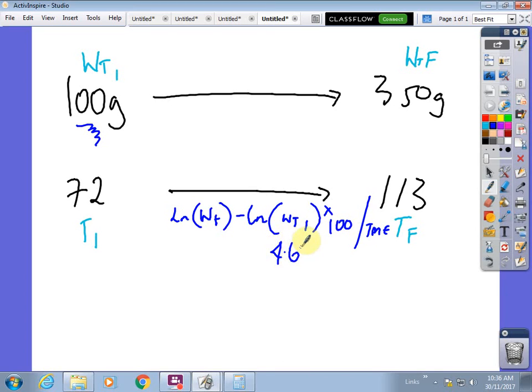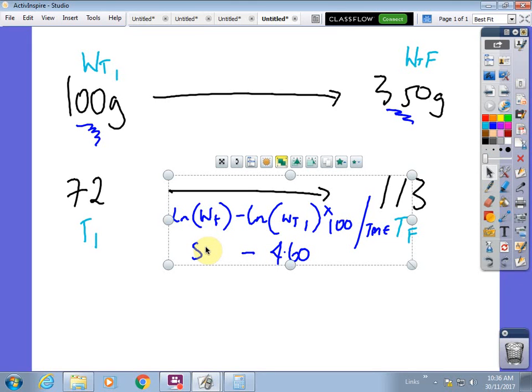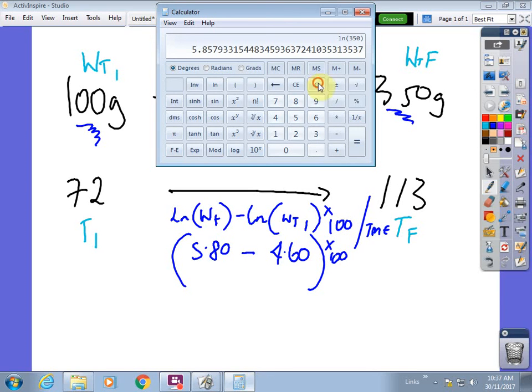Then we're going to do the same thing for this ln final weight which is going to be 350 over here. I'll plug that in, clear that off, 350 ln, so we've got 5.8. Really what we want to do is put some brackets around that and then multiply that by 100. We can put that on a calculator. Clear that out just to make it a bit easier to understand. 5.8 minus 4.6 equals 1.2.